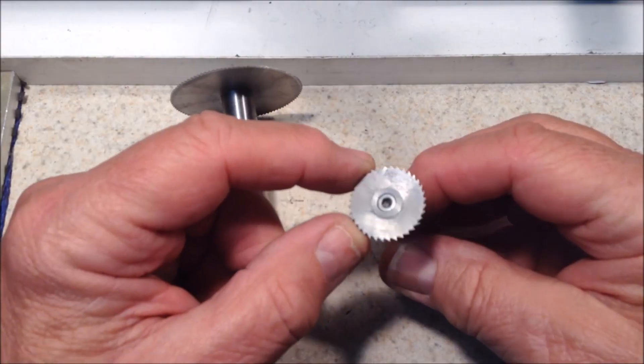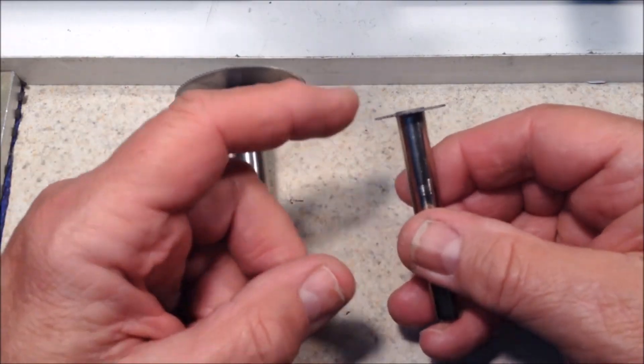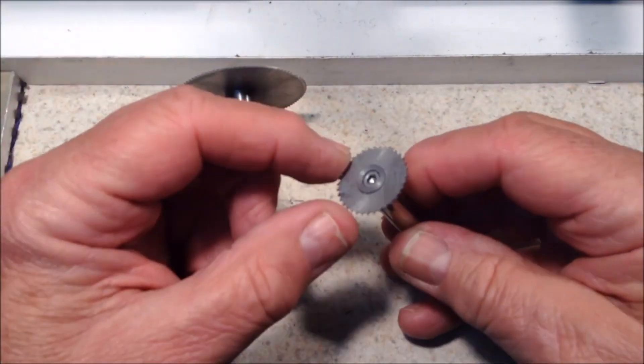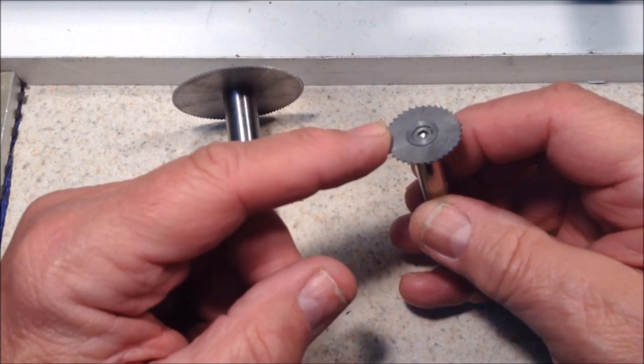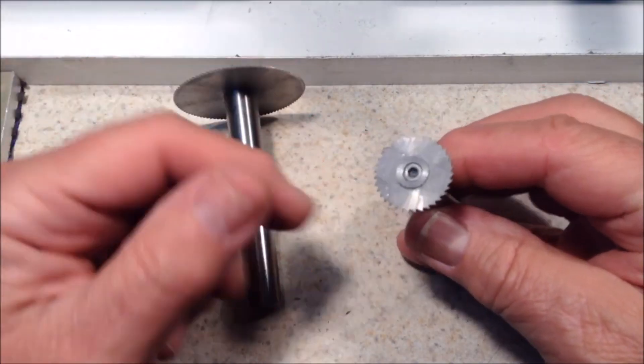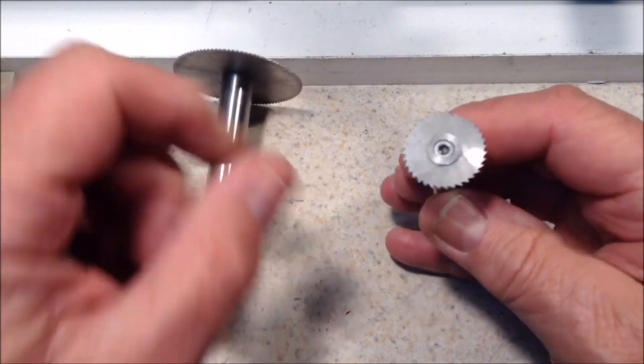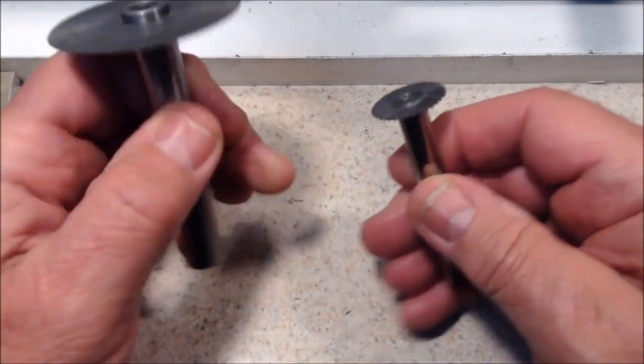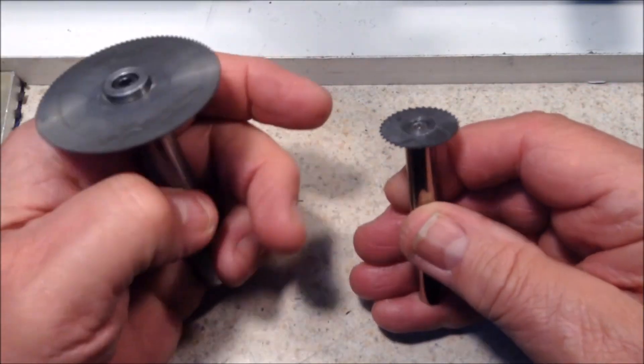As an example, these are two little slitting saw holders that I made, or arbors, to use these small slitting saws on the mini mill. I like these saws because you can buy them at Harbor Freight very inexpensively. If you go to some of the machine tool suppliers, you'll find that similar saws can be quite expensive, maybe twelve, fourteen, twenty dollars. But you can buy these types at Harbor Freight for a dollar or two or less.